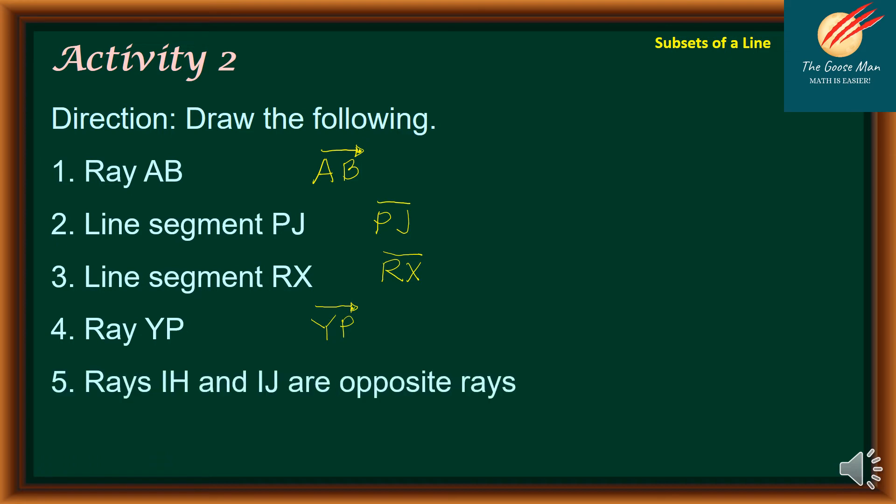Number five, rays IH and IJ are opposite rays. There are two ways to do this. Since the common endpoint is point I, let's put I in the middle. We can have here H, and the other side is J.